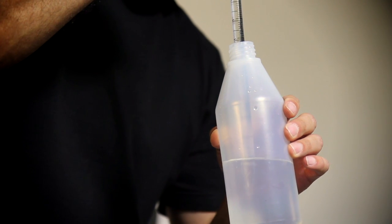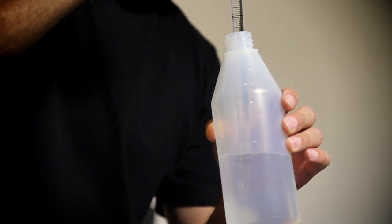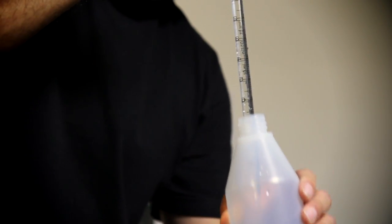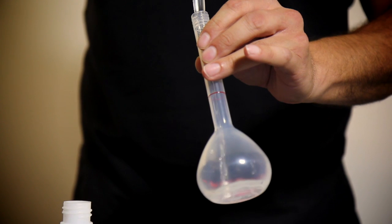To begin, measure 10 ml of the 10,000 ppm standard using the pipette. Dispense the pipette contents into the 100 ml flask.